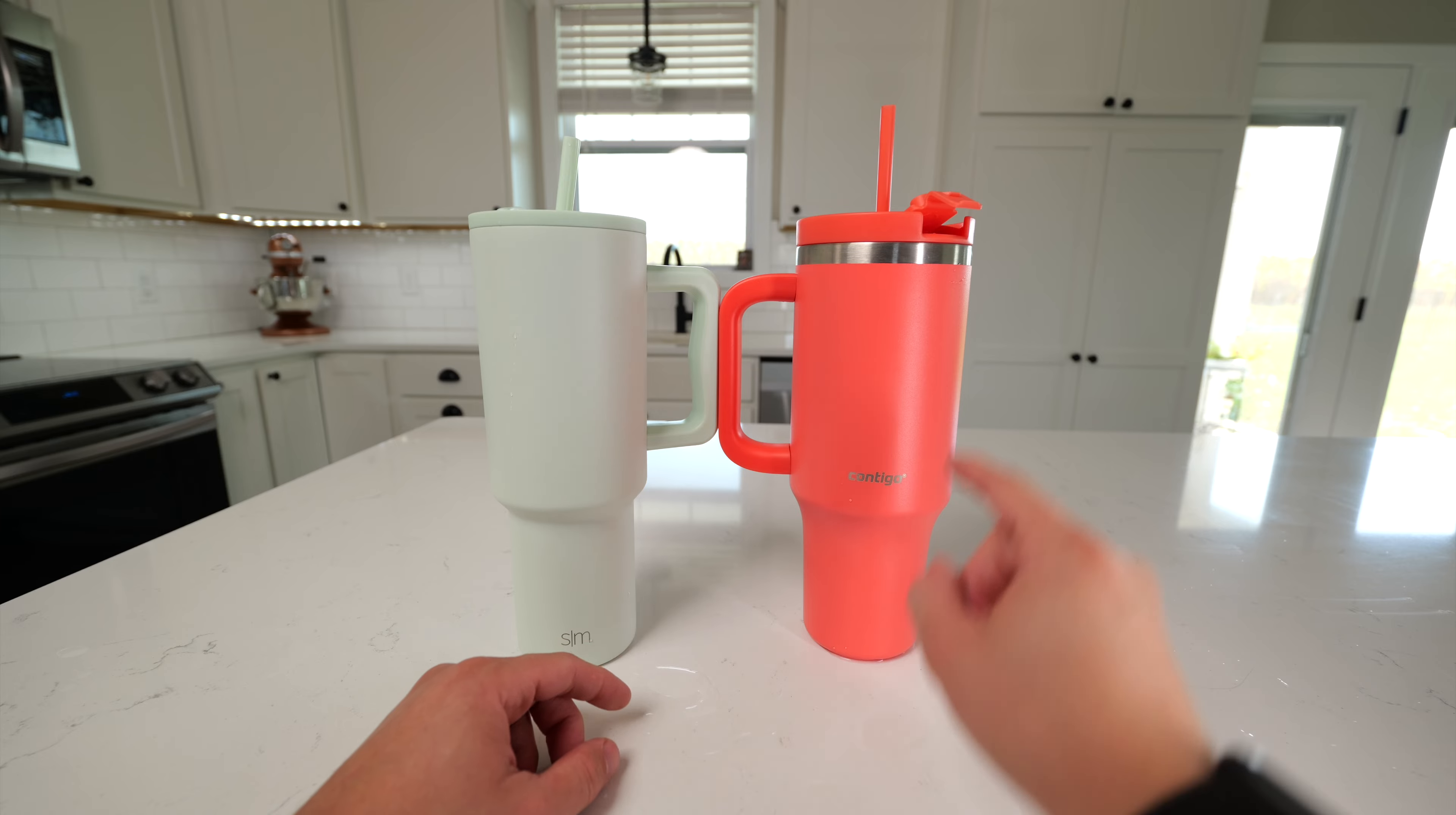So if you're trying to decide which of these to buy, I would buy the Contigo one for the more flexible lid, but buy the Simple Modern one if you want the more minimal-looking cup.